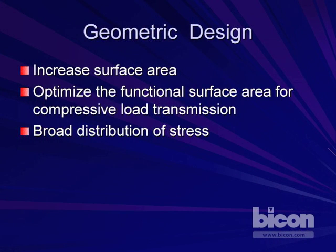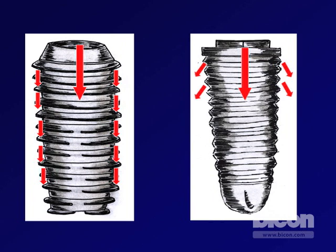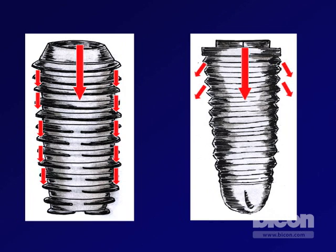Number three: the plateau design allows for a broad distribution of stress. When an occlusal load is placed on a plateau-designed implant, it is distributed throughout the body of the implant, as opposed to stress concentration with the screw-type design. Many people believe that stress concentration with a screw-type design is responsible for the bone loss seen down to the first three threads — and often farther — during the first year of function. That's why you don't see that bone loss with the Bicon.